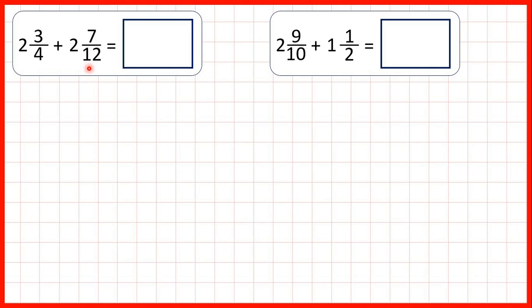Now we're adding mixed numbers, but this time we're going to get our answer by first changing both of our mixed numbers to improper fractions. Remember, to change a mixed number to an improper fraction, we multiply the whole number by the denominator and then add the numerator.